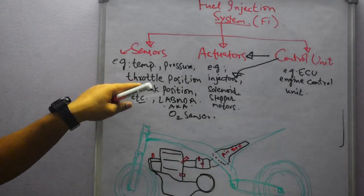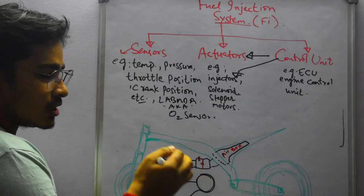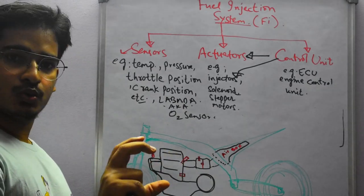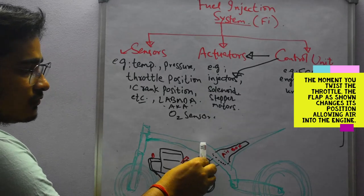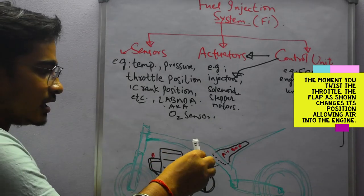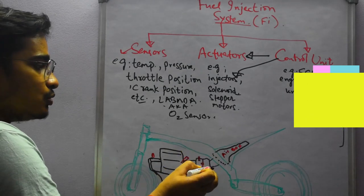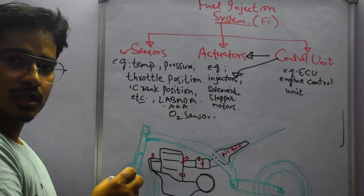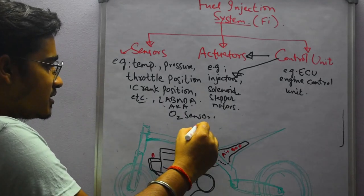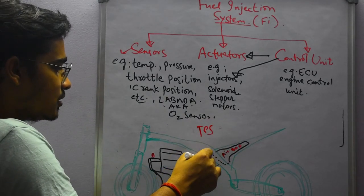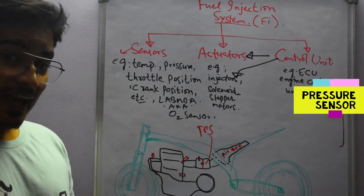Here is your TPS — the throttle position sensor. The moment you twist the throttle, this flap gets actuated. Based on your throttle twisting, this flap will open and close, and doing so allows air to go inside the engine. So this is where your TPS is located.